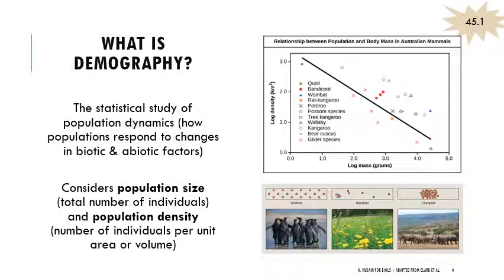Starting with demography — when we're thinking about whole ecosystems, we're thinking about both biotic and abiotic factors. Looking at a population of organisms within a species and thinking about how they change, a lot of that relates to the availability of biotic and abiotic resources, reflecting the dynamic nature of populations within ecosystems. When we study this, we consider population size, which is the total number of individuals, but even more importantly, population density — how many individuals per unit area or per unit volume, meaning how densely or closely packed together they are.